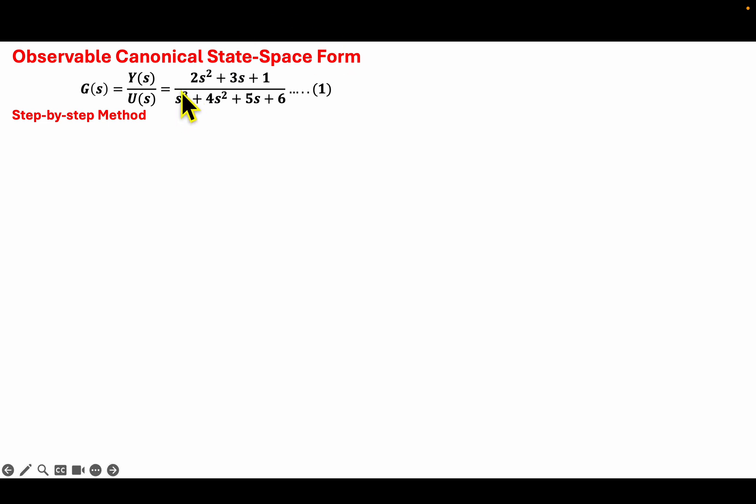In this video, we are going through the step-by-step method of converting a transfer function model into its equivalent observable canonical state-space form.